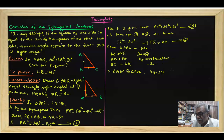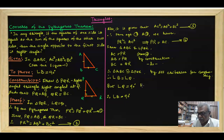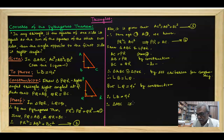By the SSS congruency criteria, hence angle B equals angle Q. But angle Q equals 90 degrees by construction, and therefore angle B is also 90 degrees. Therefore, triangle ABC is a right angle triangle.